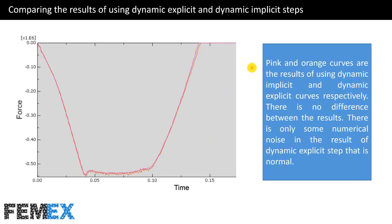Pink and orange curves are the results of using dynamic implicit and dynamic explicit steps respectively. There is no significant difference between the results. There is only some numerical noise in the result of the dynamic explicit step, which is normal. In most dynamic explicit simulations, you can see such numerical noise. If you use filters — for example, Butterworth filter or Chebyshev filter available in the visualization module — you can remove all of this numerical noise.